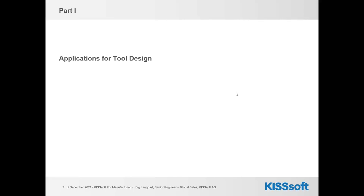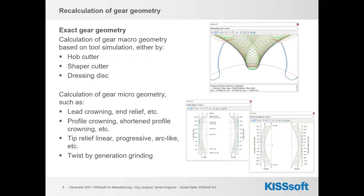Let me start with the application for tool design. Tool design is a major part of manufacturing calculation. A typical first task is to recalculate the gear geometry, including recalculation by tool simulation using three tool types. Then we add micro geometry such as crowning, various types of crowning, various types of tip relief, and so on. These are then included into a tool and simulated together with the tool.